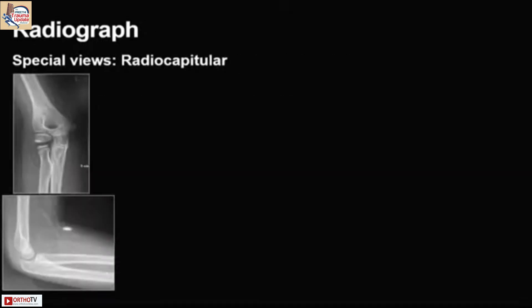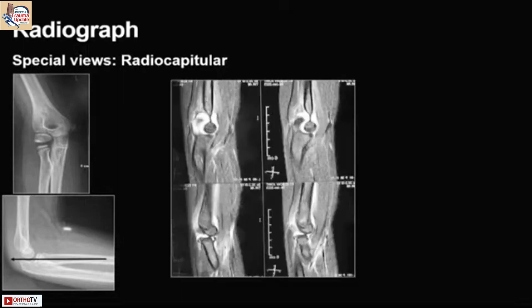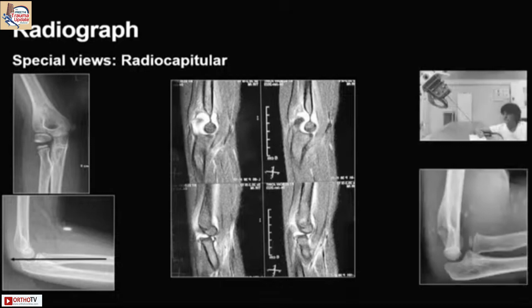In very special situations, we may need a view called the radiocapitular view. Here is an example: the radial head of this child is slightly posteriorly subluxed. To determine whether it's eccentric ossification or something else, we took an MRI and noted there was a radial head fracture causing the posterior subluxation. That view may throw better light on such things.